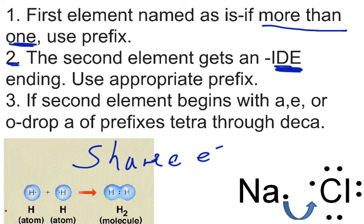The second element, for rule number two, gets an -IDE ending. We will use the appropriate prefix for that. Rule number three: if the second element begins with a, e, or o, we will drop the 'a' of the prefixes tetra through deca. That might be a little confusing, but we'll do an example, so we're not going to panic.